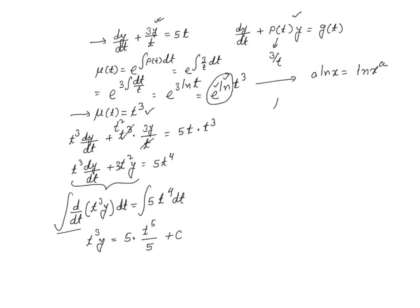So on the left, we've got t³ y equals, and the 5s cancel out, that gives me t to the power 5 plus some constant c. Now, if I divide both sides of this equation by t³, on the left this cancels out. It's going to give me y equals t², because t to the power 5 divided by t³ is t², plus some arbitrary constant c divided by t³.